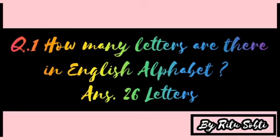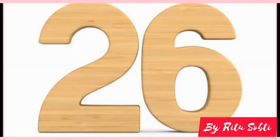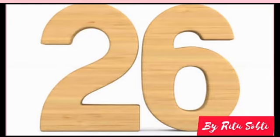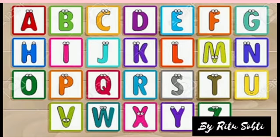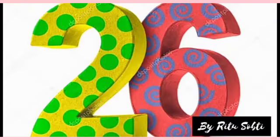Question number one: how many letters are there in the English alphabet? The answer is 26 letters. There are 26 letters in the English alphabet. You know all the letters, right? Bachchon, aapko sare letters learn hai na, A to Z tak.